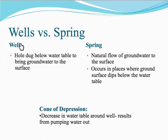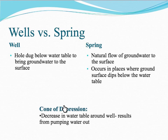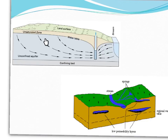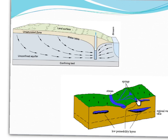A well is just a hole that's been dug below the water table to bring the groundwater to the surface. Versus a spring, which is a natural flow of groundwater to the surface. Springs occur in places where the ground surface dips below the water table. In this top picture you can see our zone of saturation, zone of aeration, and water table — and here's the little cone of depression resulting from pumping out water. And here's a spring, where the surface of the ground dips below the water table.